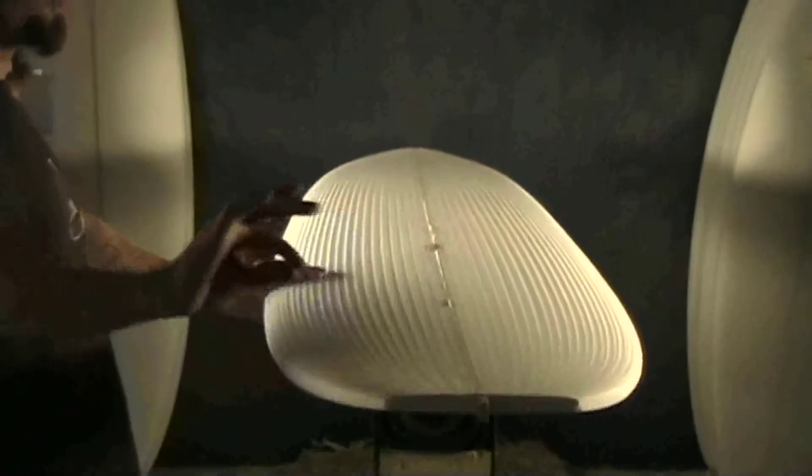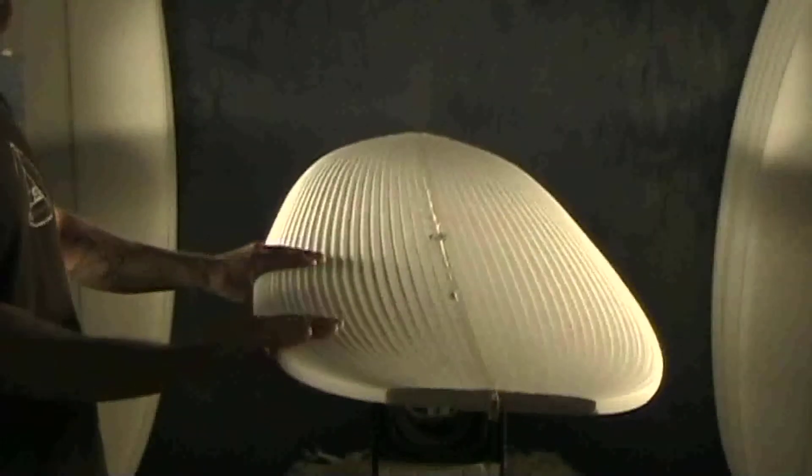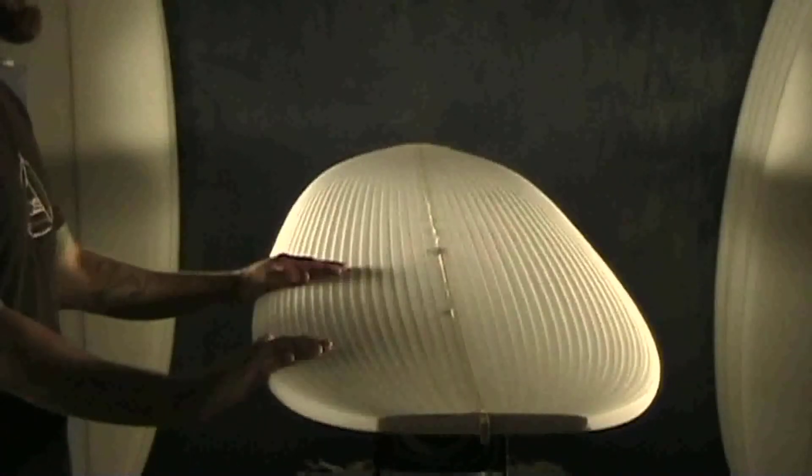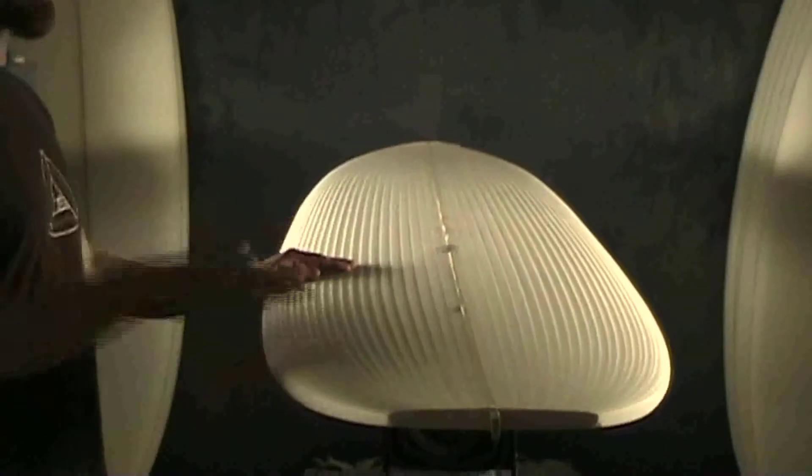Tail foils out really thin, kind of knifey to make your turn faster. You can put this thing on the rail and not feel like it's bouncing back at you.